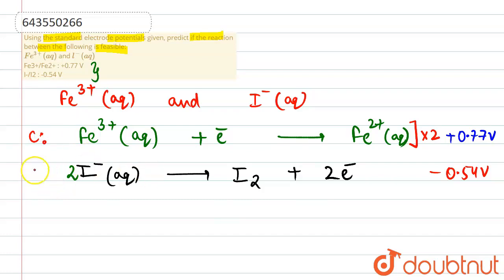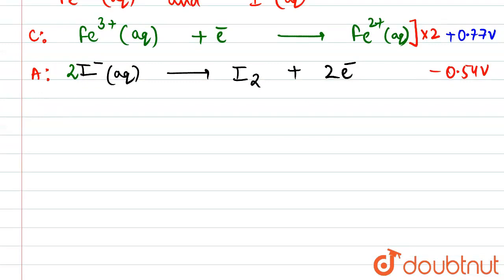If we write the overall net reaction that is taking place, that would be: 2 Fe3+ aqueous plus 2 iodide ions aqueous are basically leading to 2 Fe2+ aqueous plus iodine solid.